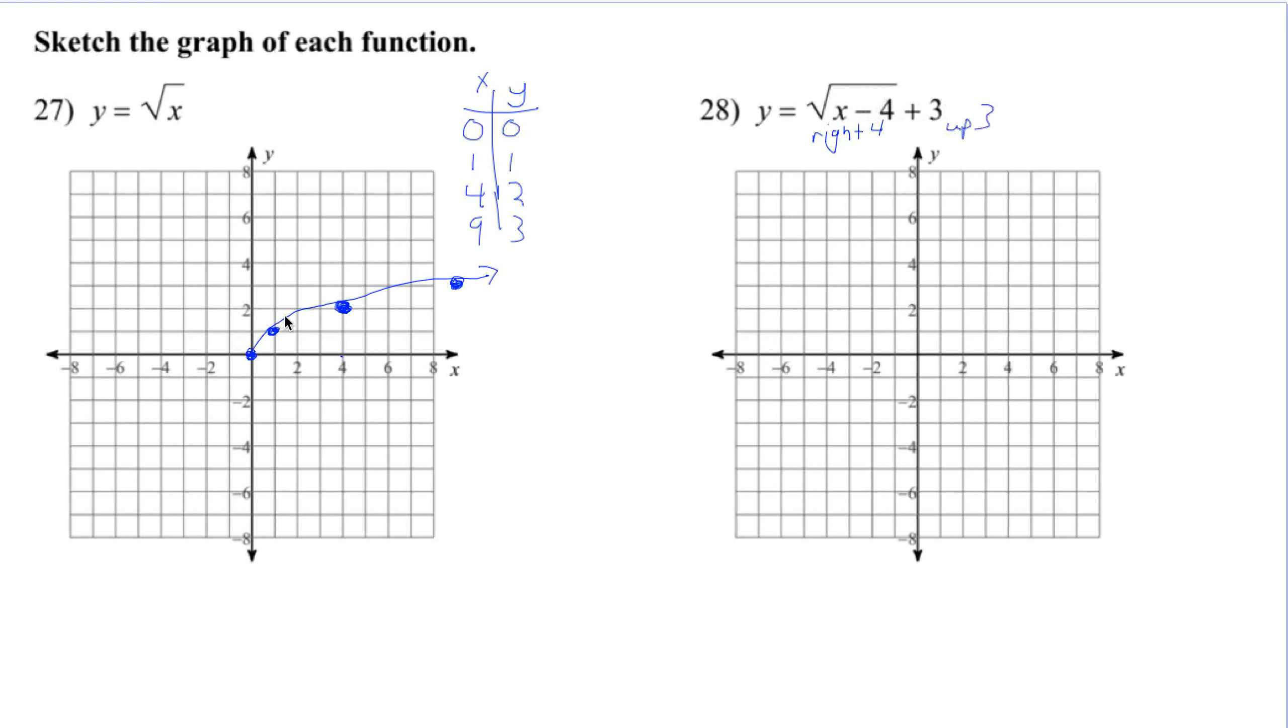So really, we're taking this whole graph, we're shifting it right 4 and up 3. So it's going to be there. And we might know the shape. We could plug in points again. We want perfect squares in here.